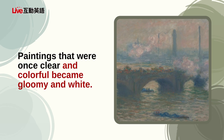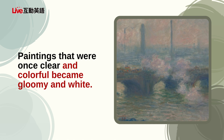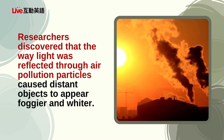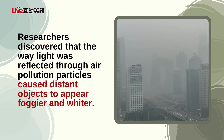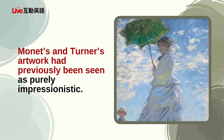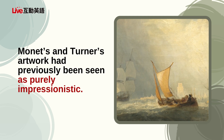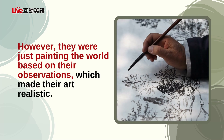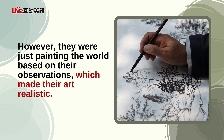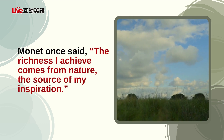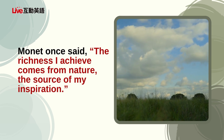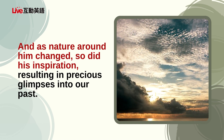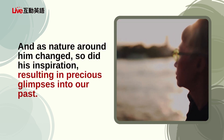Paintings that were once clear and colorful became gloomy and white. Researchers discovered that the way light was reflected through air pollution particles caused distant objects to appear foggier and whiter. Monet's and Turner's artwork had previously been seen as purely impressionistic. However, they were just painting the world based on their observations, which made their art realistic. Monet once said, 'The richness I achieve comes from nature, the source of my inspiration.' And as nature around him changed, so did his inspiration, resulting in precious glimpses into our past.